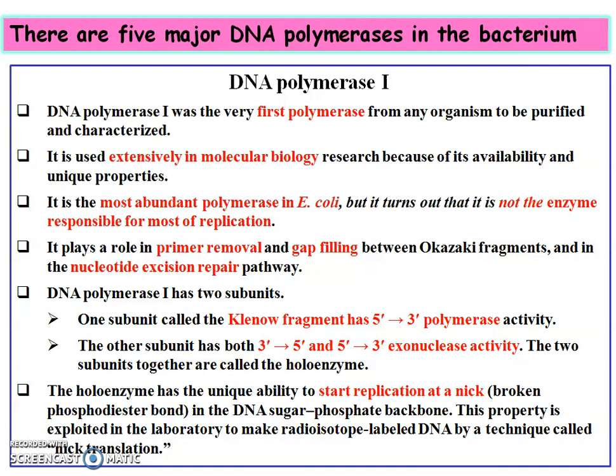Exonuclease activity is used in proofreading. If an incorrect nucleotide is incorporated during replication, the DNA polymerase uses its 3' to 5' and 5' to 3' exonuclease activity to remove the incorrectly incorporated nucleotide. DNA polymerase 1 is a holoenzyme with two subunits; one is known as the Klenow fragment, which has the polymerizing activity but no 3' to 5' polymerase activity — that is why DNA is always synthesized in the 5' to 3' direction.